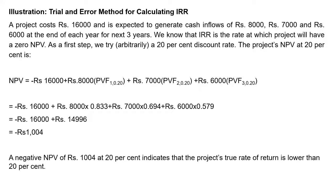There is a project which costs 16,000. The cost of the project is 16,000 and it is expected to generate cash inflows as follows: in the first year we will get 8,000; next year, 7,000; the year after, 6,000. You can see that in year one we get 8,000, year two 7,000, year three 6,000 — this is a case of uneven cash flow.